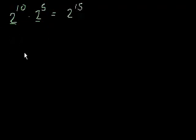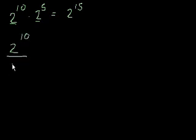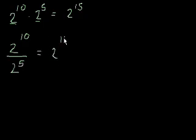We also learned that if it was 2 to the 10th over 2 to the 5th, we would actually subtract the exponents. So this would be 2 to the 10 minus 5, which equals 2 to the 5th.